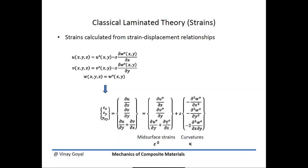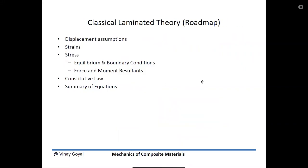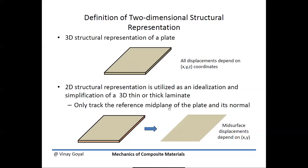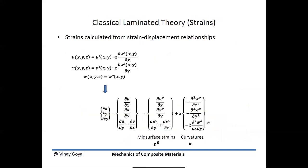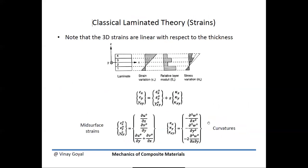The strains depend strictly on deflections that are only functions of x and y coordinates, with z explicitly factored out. This simplifies the problem considerably. The unknowns for the plate are now just u, v, and w at the mid-surface, whereas before we needed u, v, and w throughout the entire 3D plate. The strains can be expressed as mid-surface strains plus curvatures multiplied by z.